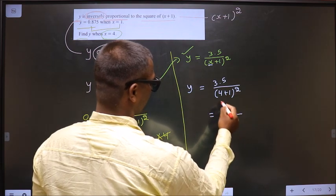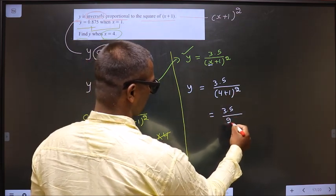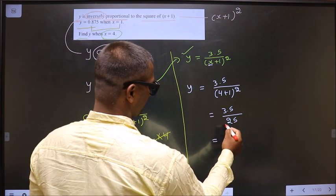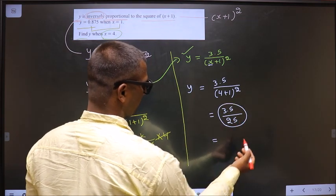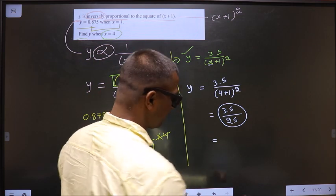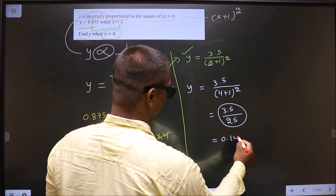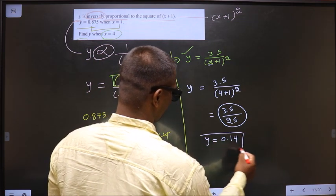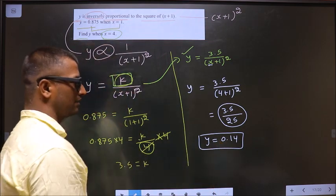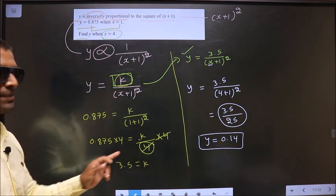So 3.5 by 4 plus 1 is 5. 5 square is 25. So now 3.5 by 25 put in the calculator. You get 0.14. This is the value of y. Am I clear?